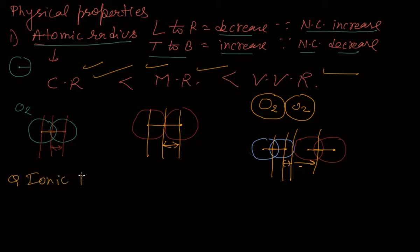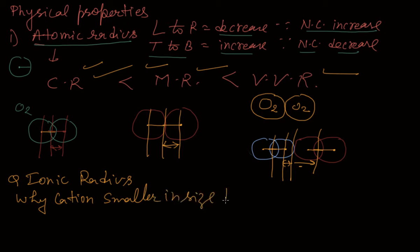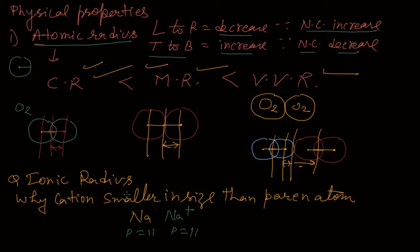Next is ionic radius. On the basis of ionic radius, we have two questions. Why is a cation smaller in size than the parent atom? The answer is: if we take sodium and sodium cation (Na+), protons are 11 in both cases. But electrons in sodium are 11, while electrons in sodium cation are 10. So nuclear charge effectively increases, and the cation is smaller in size - it has greater nuclear charge per electron.